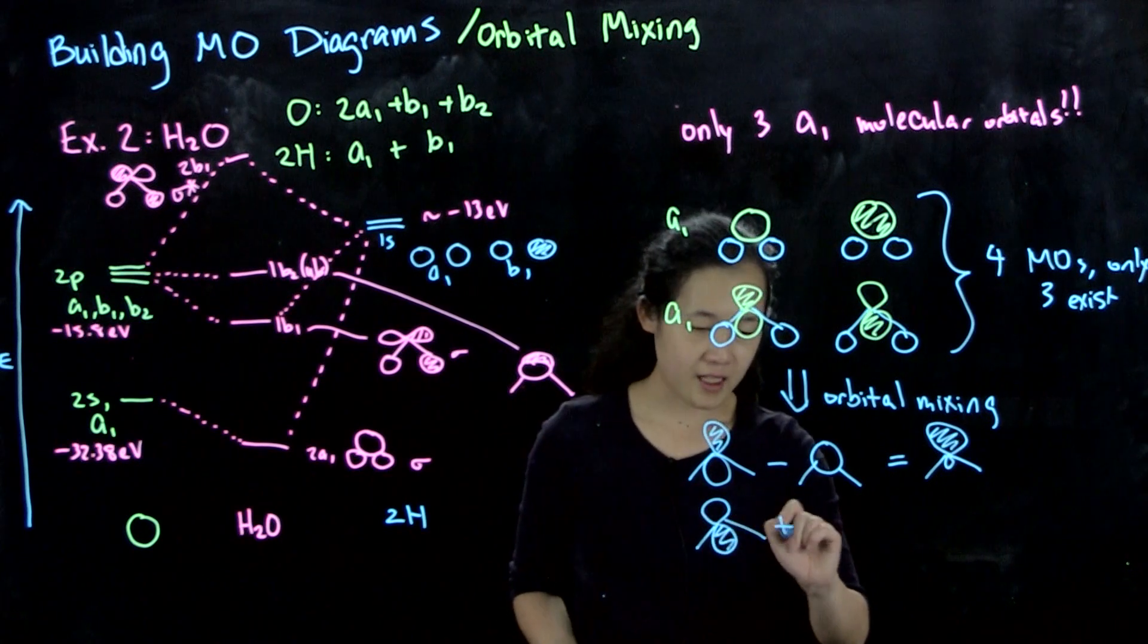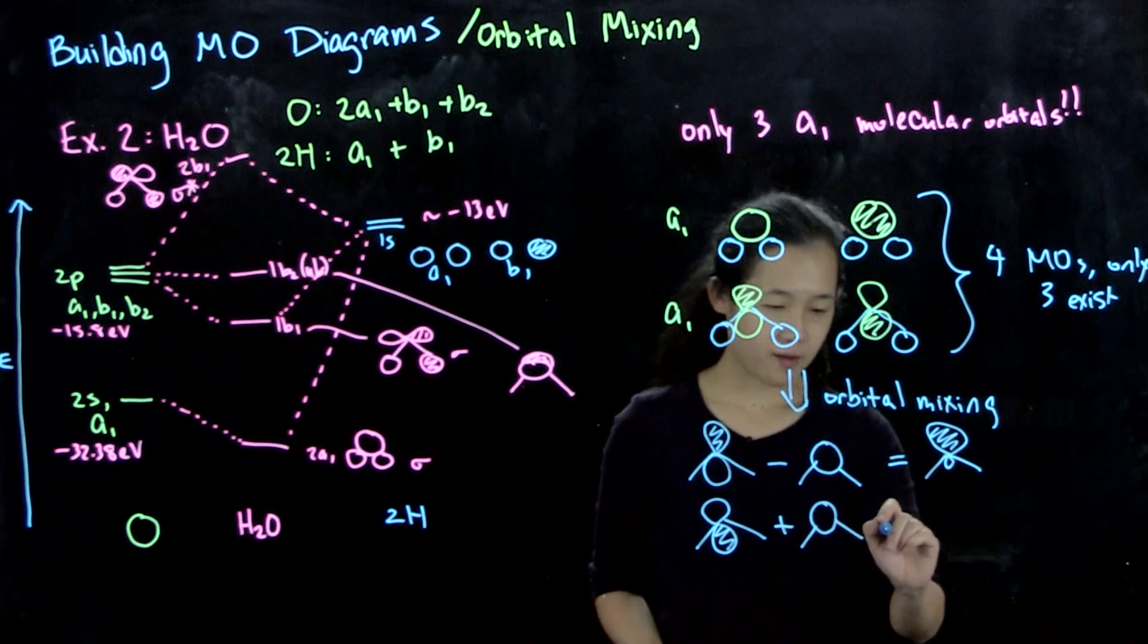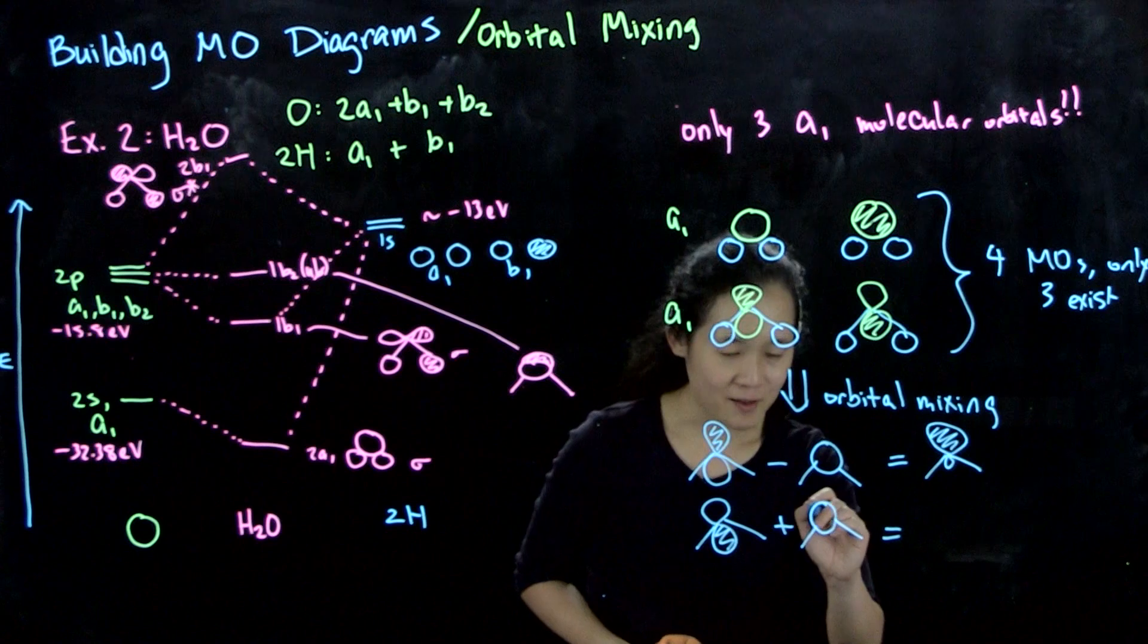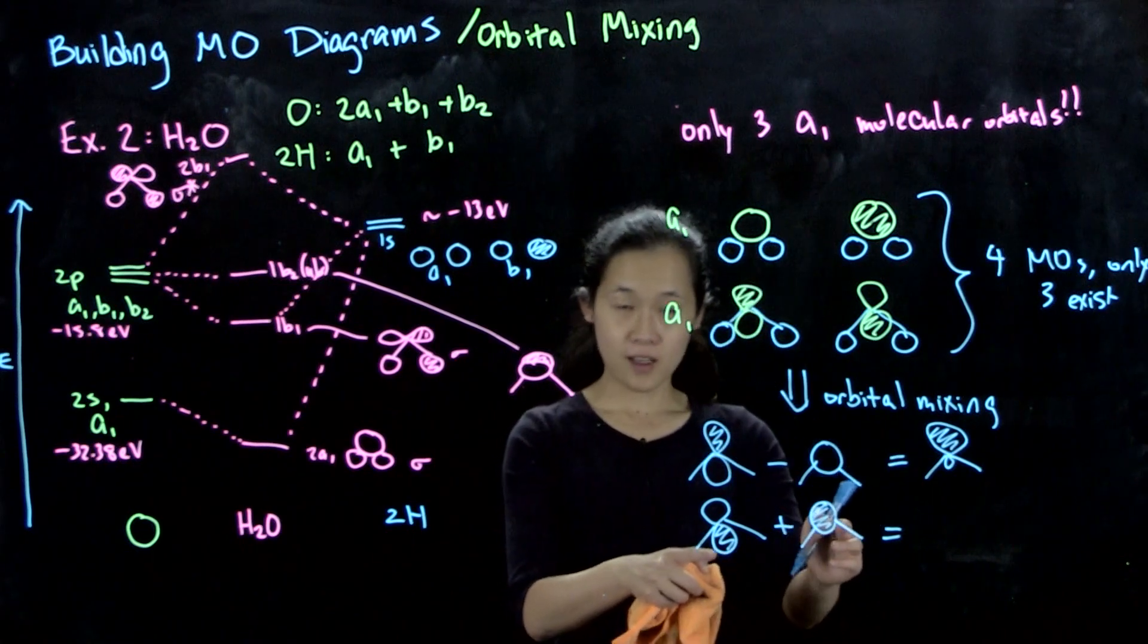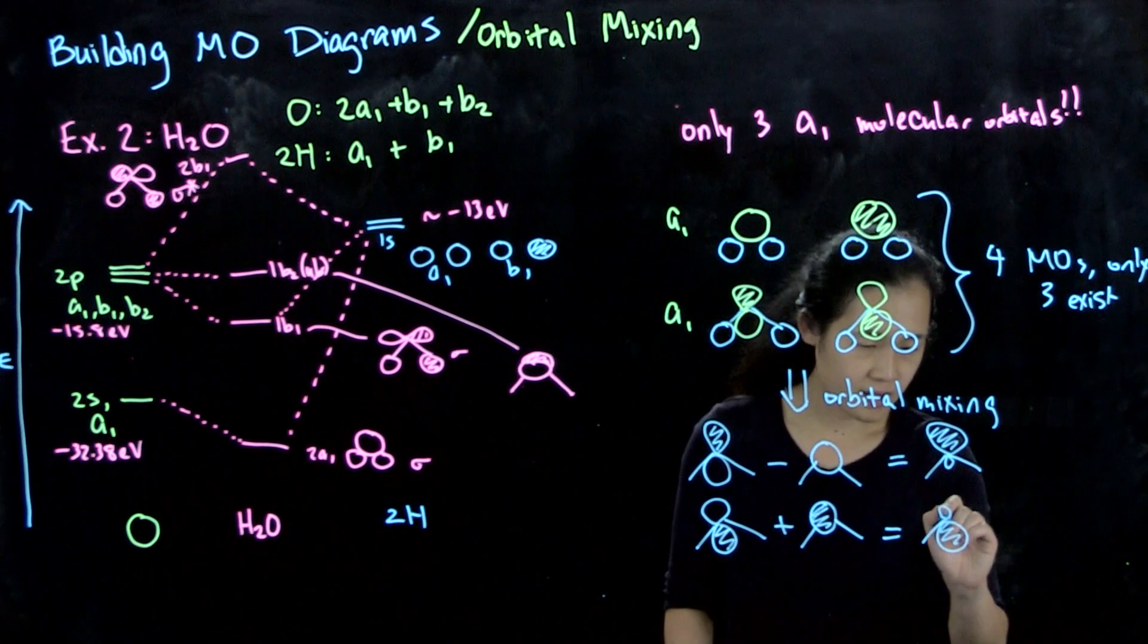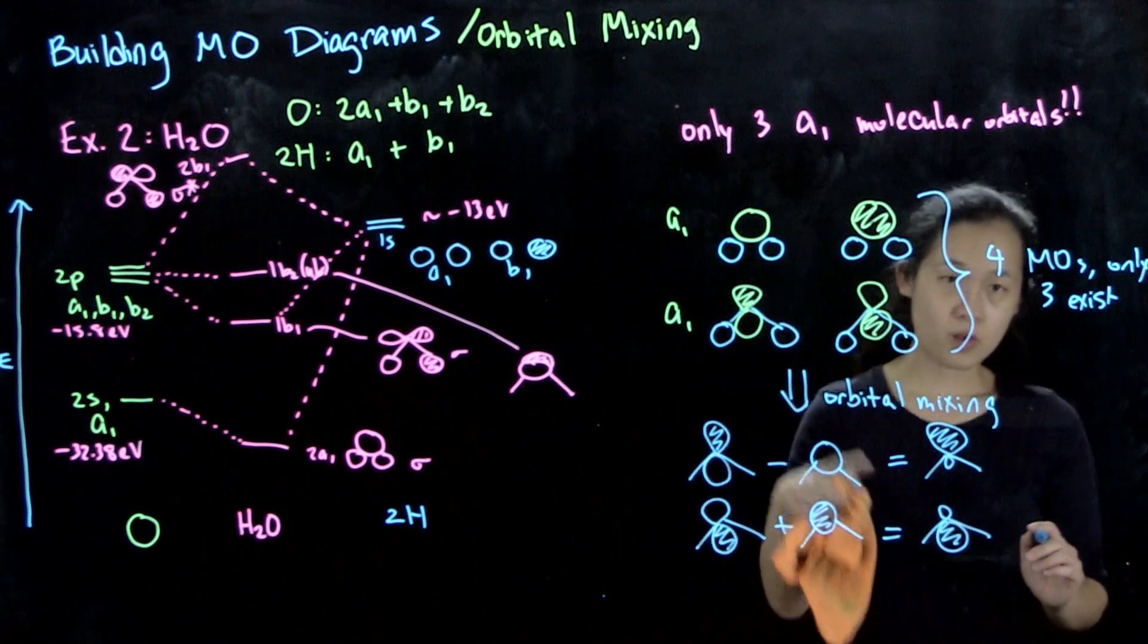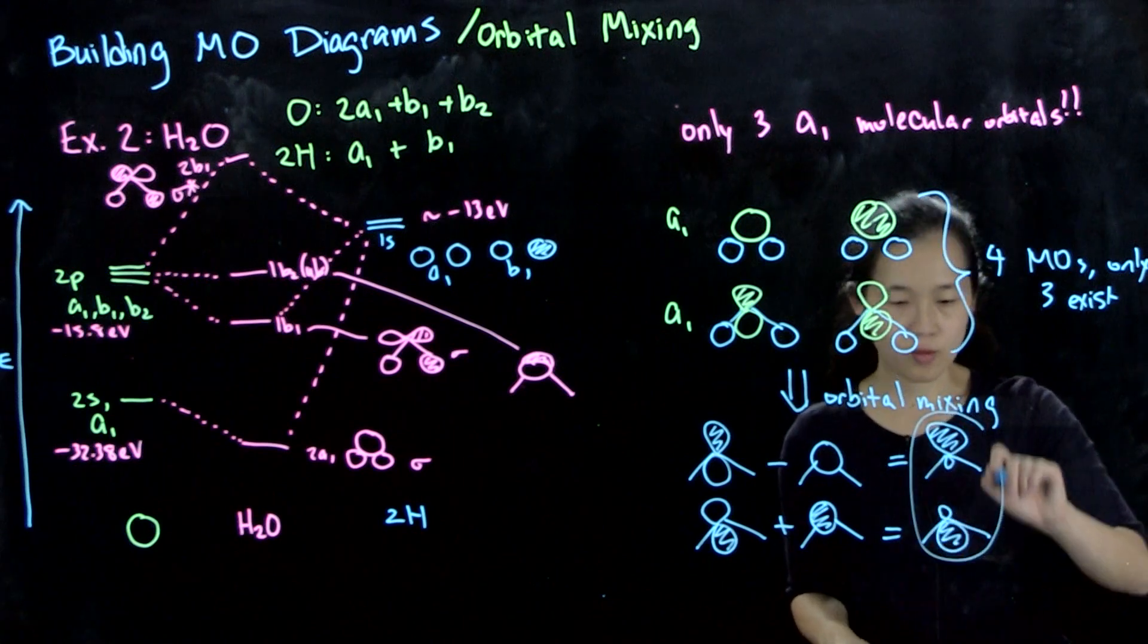We can then form another linear combination of our mixing of the p and s orbitals. Let's add this orbital here. When we add these two together, what we get out is this fat one down here. You can see how we've now mixed these two orbitals and ended up with these orbitals.